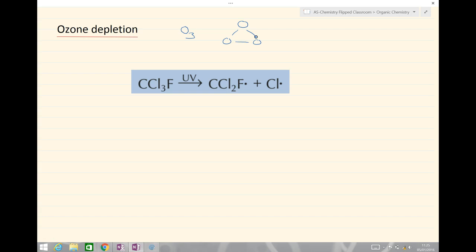So why are the CFCs a problem? Well, what happens in the upper atmosphere is the CFCs can get up there and they are broken down by UV light to form two radicals, the carbon based radical on the left and importantly this chlorine based radical on the right hand side.